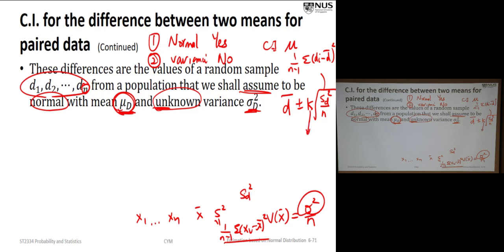This example of differences is basically just one sample — one sample of the differences d1 up to dn — taken from a population which we assume is normally distributed. Second, we talk about whether we know the variance. Here we talk about the population variance. We don't know it. Then we are looking at the confidence interval for the mean mu_d.